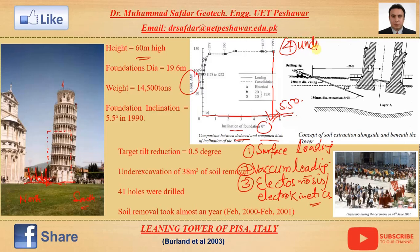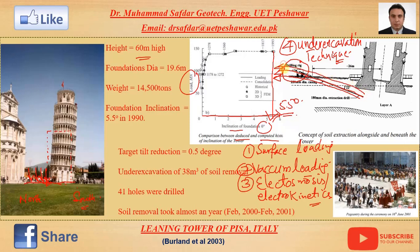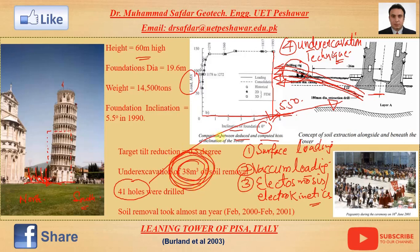In the under-excavation technique, a drilling rig is used to remove soil present on the northern side of the tower. Approximately 41 holes were drilled on the northern side, beneath the foundation at the center. Approximately 38 cubic meters — a huge amount of soil — was excavated in almost a year.